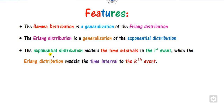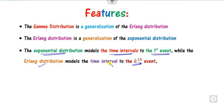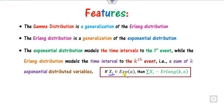The exponential distribution models the time interval for the first event, and since the Erlang distribution is its generalization, it can model the Kth event. If X1, X2, ..., XK each follow the exponential distribution independently, then their sum follows the Erlang distribution. This property is very helpful when solving multiple choice questions.